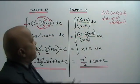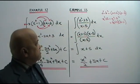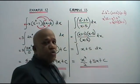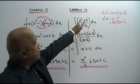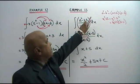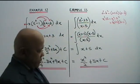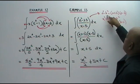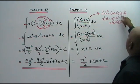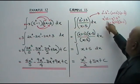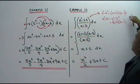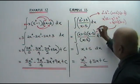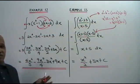Now let's go to example 13. You are asked to integrate this expression with respect to x. If you look carefully, the numerator is x squared minus 25. This is x squared minus 5 squared, so we can apply the identity: a squared minus b squared equals a plus b times a minus b. So x squared minus 25 becomes x plus 5 times x minus 5.